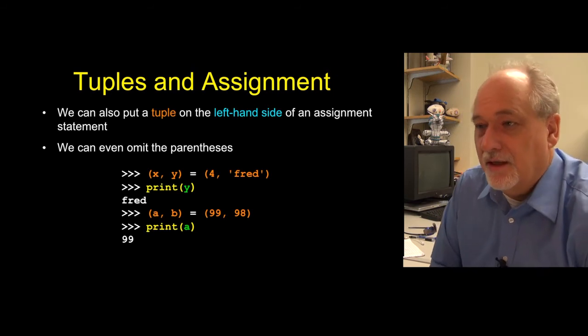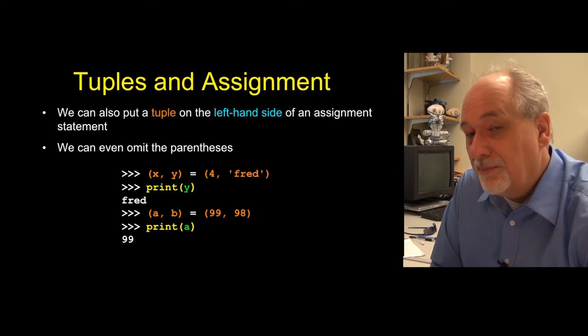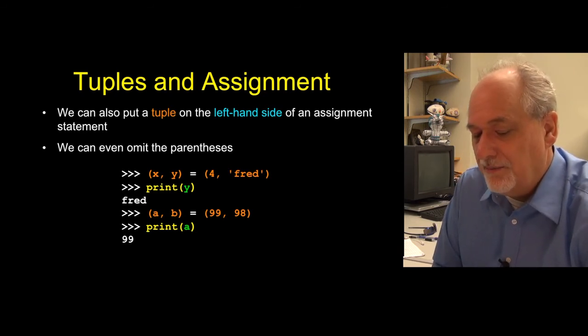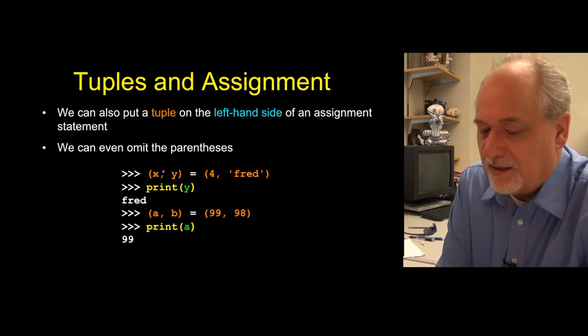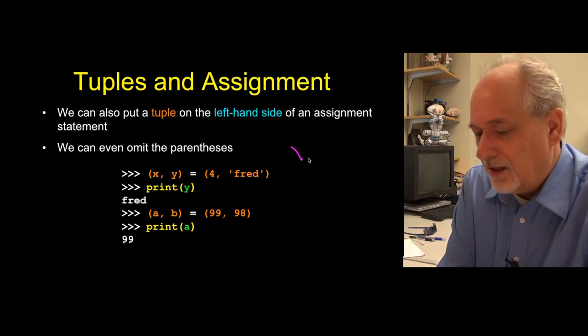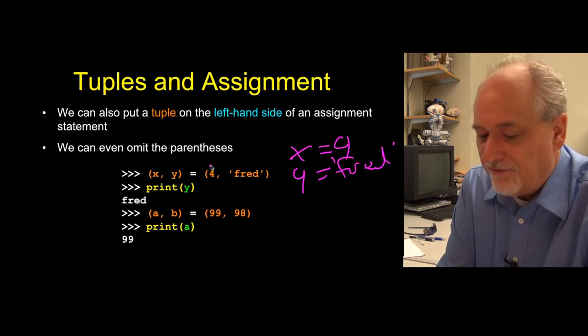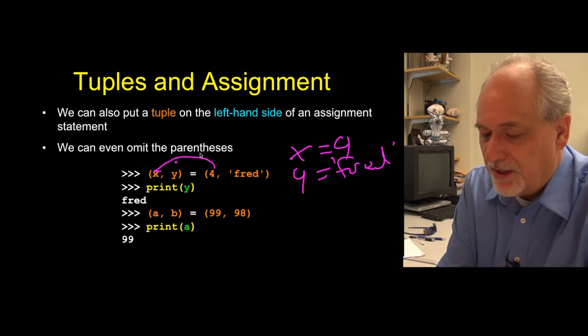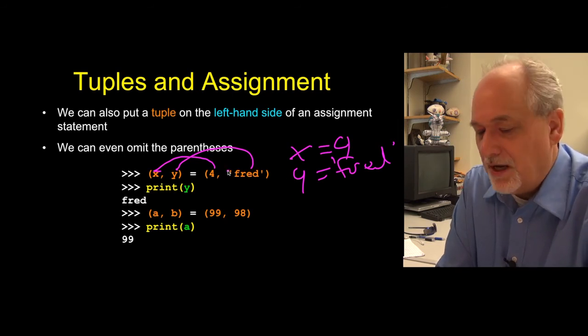So the other thing that's interesting about tuples, and we've actually sort of seen this, is that you can put a tuple that includes variables on the left side of the assignment. And this takes a little getting used to, but it's really cool, and no other language that I know of does this. So if we say x comma y, that's a two-tuple. Both have to be variables. You can't put constants on this side. You know, it's like saying x equals four, y equals fred. So what happens is you can put a tuple on the far side of an assignment statement, and the four goes to x, and the fred goes to y. And you say, what's in y? Well, y is indeed fred. And so this is like two assignment statements.